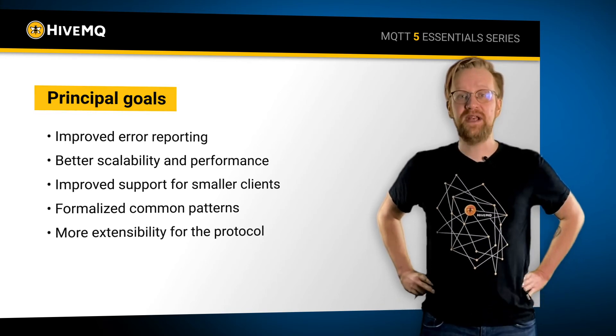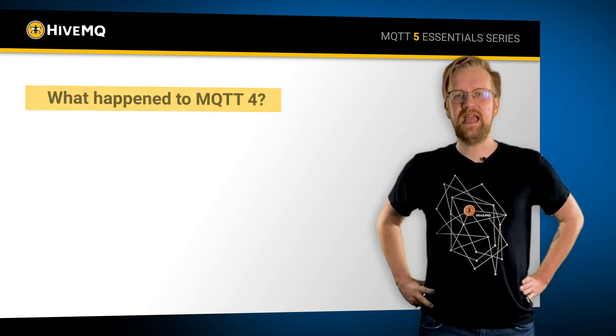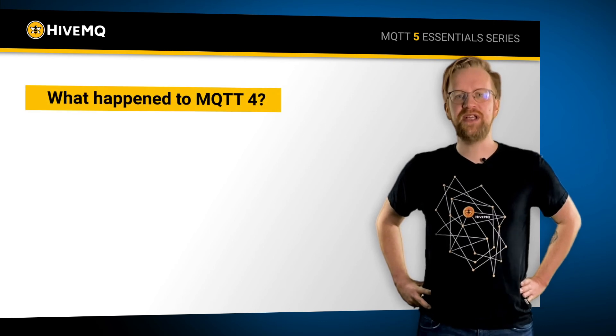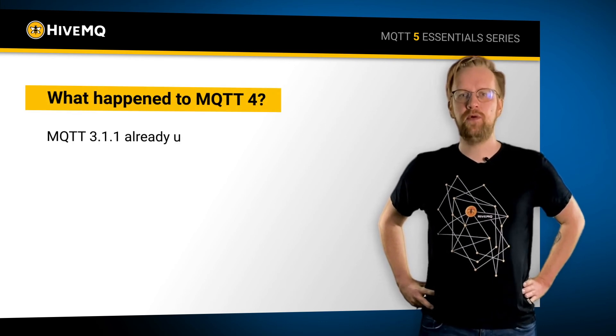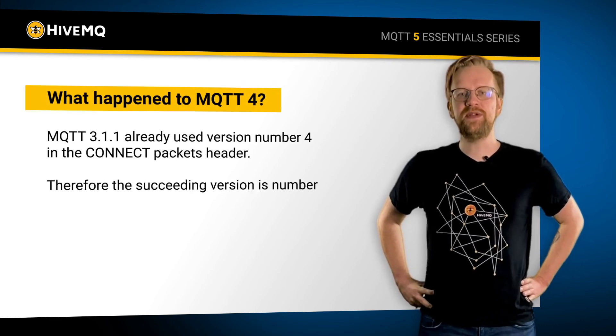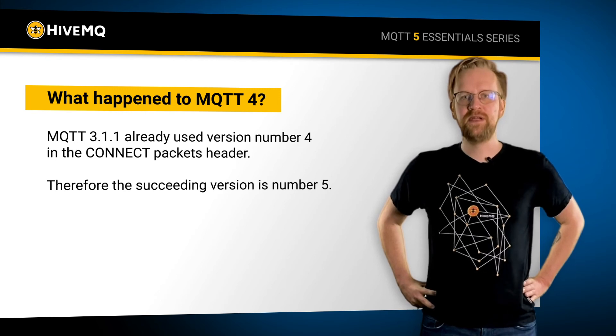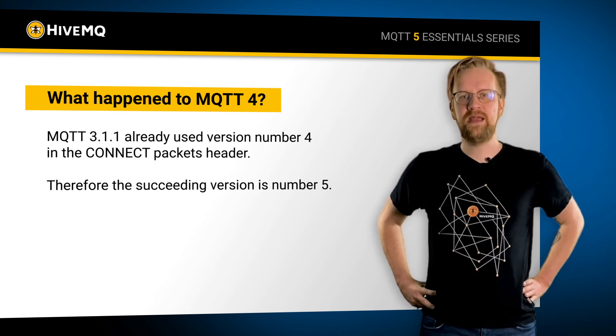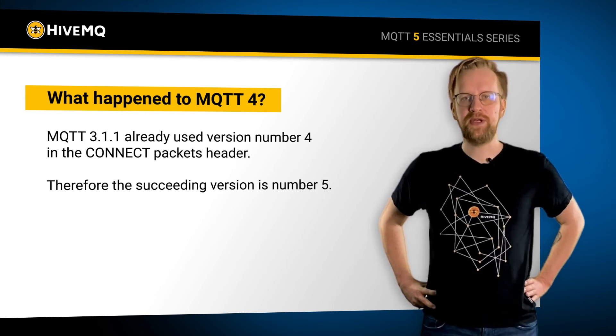As you might have noticed, the MQTT versioning skipped number 4. This is due to the reason that the protocol header itself specifies 4 as MQTT 3.1.1.